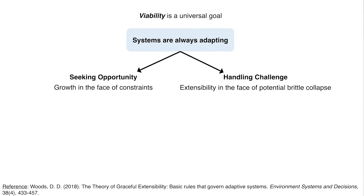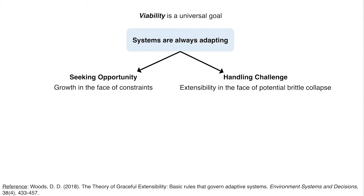The other basic form of adaptation is how we seek opportunity. How do we grow? How do we create new capabilities, provide new kinds of services, and deliver new kinds of value? But seeking opportunity to produce growth happens in the face of constraints. We don't have a free, wide space within which to develop new things — we have to work around a variety of constraints.